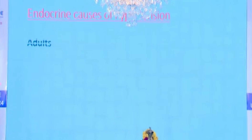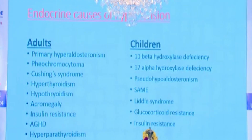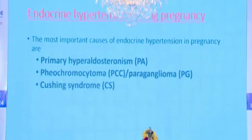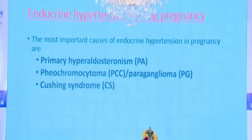Coming to the endocrine causes of hypertension in adults as well as in children, secondary causes of endocrine hypertension can be mostly of adrenal origin, or they can be from thyroid disorders, insulin resistance, hyperparathyroidism, or growth hormone deficiency in adults. Coming specifically to endocrine hypertension during pregnancy, when we use that term it usually pertains to the adrenal origin of hypertension. The most common and important conditions are primary hyperaldosteronism, pheochromocytoma or paraganglionoma, and Cushing's syndrome.